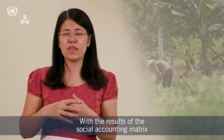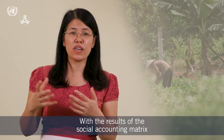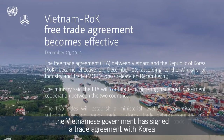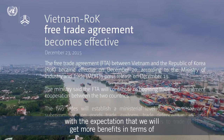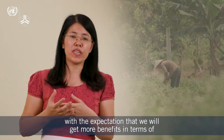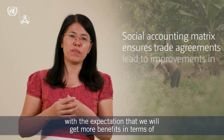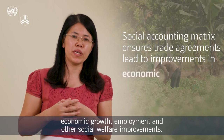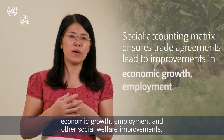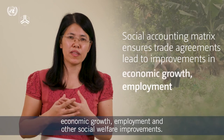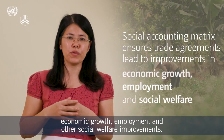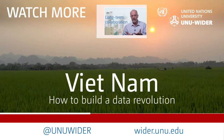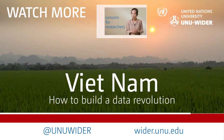With the results of the study using the social accounting matrix, the Vietnamese government has signed the trade agreement with Korea, with the expectation that we will get more benefits from this trade agreement in terms of economic growth, in terms of employment, and in terms of social welfare improvement.